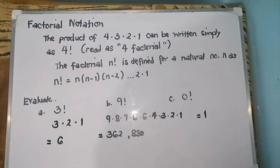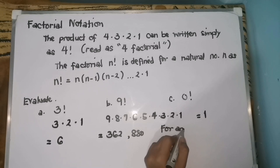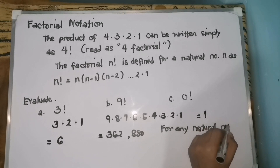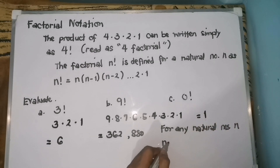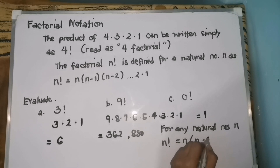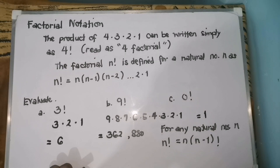Therefore, this can be generalized as follows: for any natural number n, n factorial equals n times the quantity (n−1) factorial. I hope that you learned something today. Don't forget to share this video with others, give this video a thumbs up, and see you on our next video lesson. Thank you for watching.